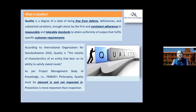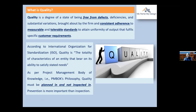Quality is a degree or state of being free from defects, deficiencies, and substantial variations, brought about by the firm and consistent adherence to measurable and tolerable standards to attain uniformity of output that fulfills specific customer requirements. That means quality is nothing but fulfilling customer requirements — it should be free from defects and must have consistent adherence to measurable standards.